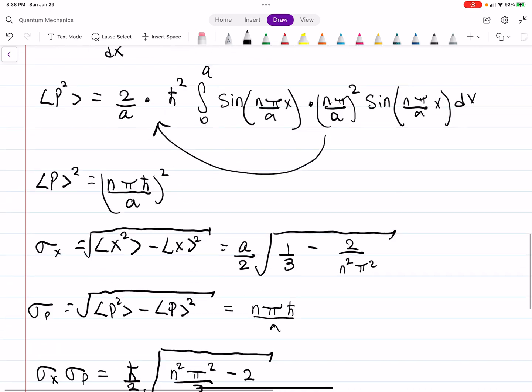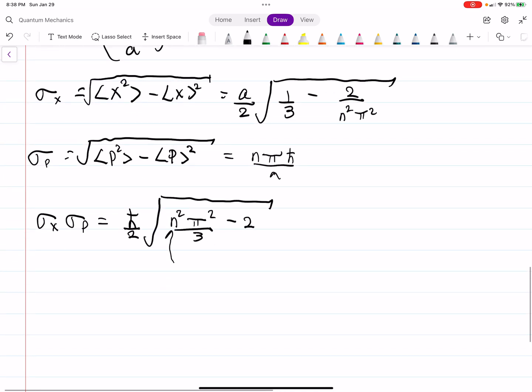So, in that case, if we look at this, we need to let n equal 1. If you let n equal 1, you'll get your smallest uncertainty for this. And in that case, it'll just be h bar over 2 times the square root of pi squared over 3 minus 2. And this still does not violate the uncertainty principle. But that's the closest you could get.